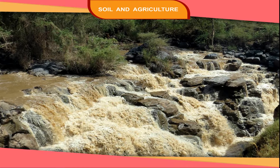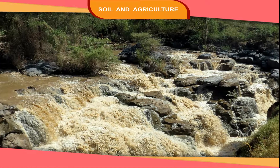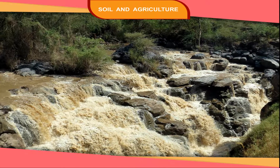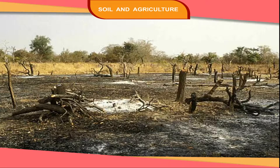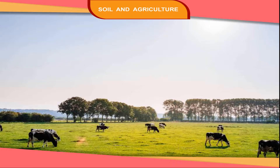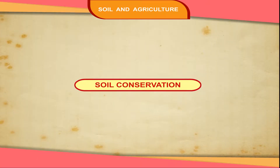The top soil of hilly areas flows away with the rainwater. Cutting down of trees causes soil erosion. Overgrazing on the farmlands also causes soil erosion.